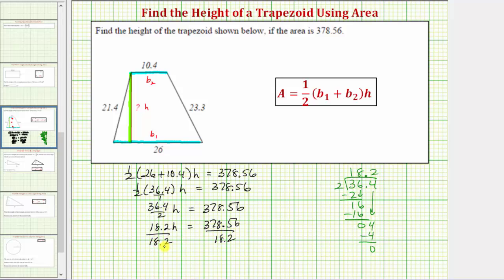Dividing by 18.2 undoes multiplying by 18.2, and therefore the left side simplifies to h. One times h is h, and therefore h is equal to this quotient.